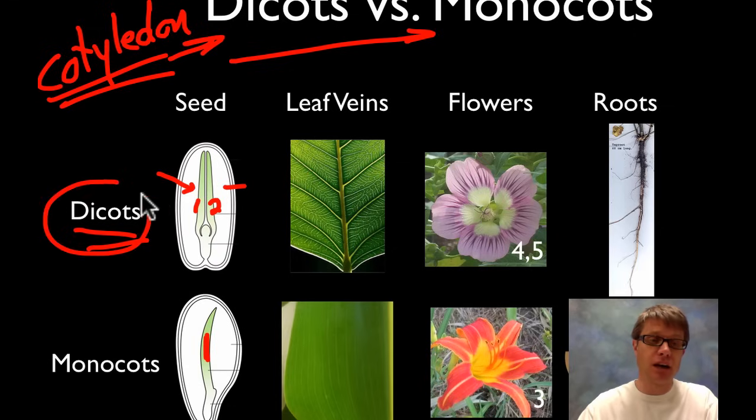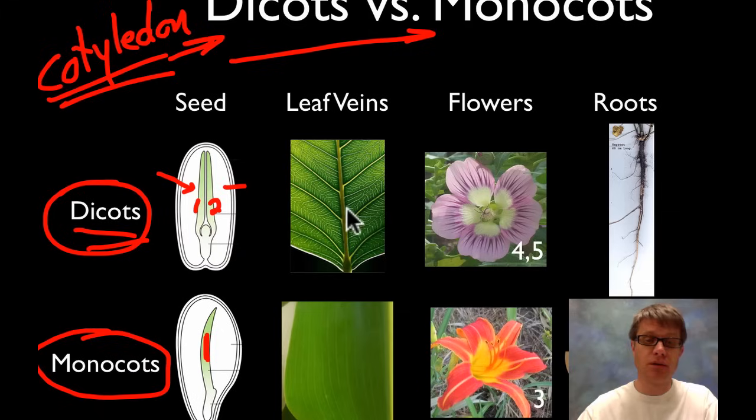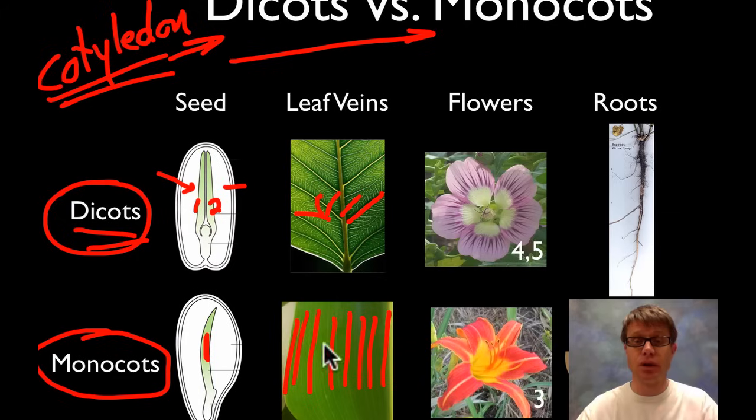Now the quintessential dicot that I think of is dandelion and monocot I think about is grass. And so if you've ever looked at a dandelion leaf, all the veins, which really are vascular materials, kind of like our circulatory system moving water and sugar, are going to be net-like. They're going to branch out. But if we're talking about a monocot they're going to be parallel. So if you've ever looked at the veins in a grass, a blade of grass, it's going to be all parallel.